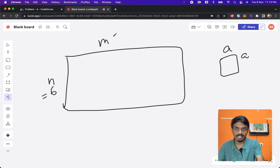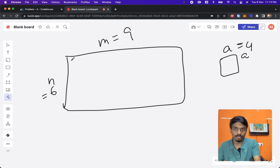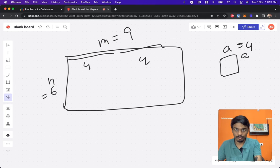So let's say n value is 6, m value is 9, and a value is 4. How many blocks do you need so that the entire thing is covered? If you consider the top length, how many fours do you need? For 9, only 8 is covered with two blocks, so one more is there. We cannot break that block, we have to put one more 4x4 square, so we need three squares here.